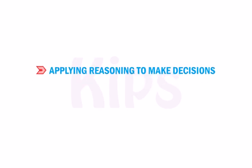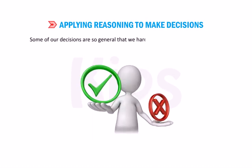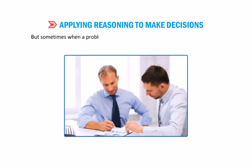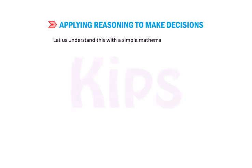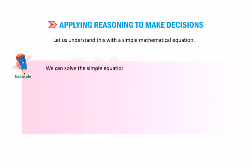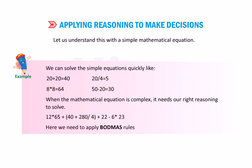Now let's find out how to apply reasoning to make decisions. Everyone makes decisions in daily life. Some of our decisions are so general that we hardly take any time to decide, but sometimes when a problem is complex, it needs our wisdom and experience. Let us understand this with a simple mathematical equation. We can solve simple equations quickly like 20 plus 20 equals 40, 20 divided by 4 equals 5, 8 into 8 equals 64, 50 minus 20 equals 30. When a mathematical equation is complex, it needs our right reasoning to solve it, for example: 12 into 65 plus 40 plus 280 divided by 4 plus 22 minus 6 into 23. Here we need to apply BODMAS rules to give the correct solution.